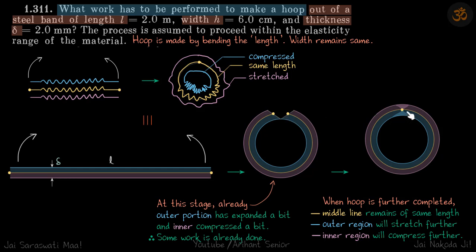So when you complete the loop, you can imagine there's going to be a lot of compression here and there's going to be a lot of expansion here, and again the middle part of this rod is going to be of same length. So that's what we have written: when hoop is further completed, middle line remains of the same length, outer region will stretch further and inner region will compress further.